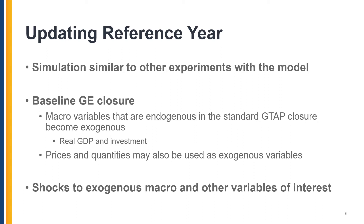The update employs a so-called baseline general equilibrium closure. The baseline closure depends on the goal of the update and is case-specific. Decisions regarding which variables we shock and which variables adjust endogenously in the updating simulation depend on the specifics and goals of the update.